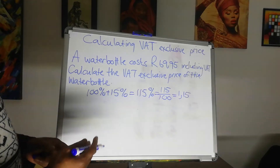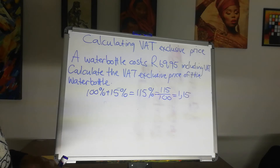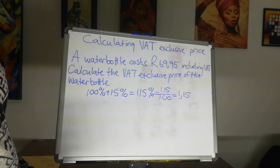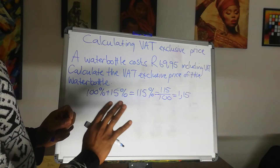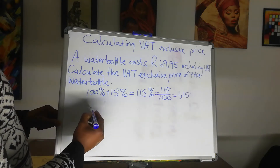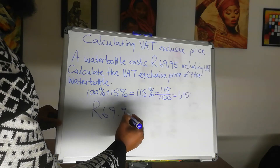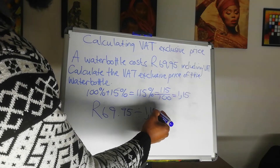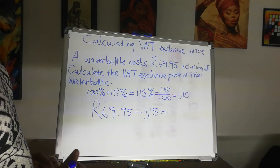Then we are going to say, because we are taking the VAT out of the value, the amount must decrease. And to do that, you can either subtract or divide. When calculating here, we are going to divide, not subtract. So we are going to say 69.95 divided by 1.15, and that is going to give us an amount which is smaller than 69.95.